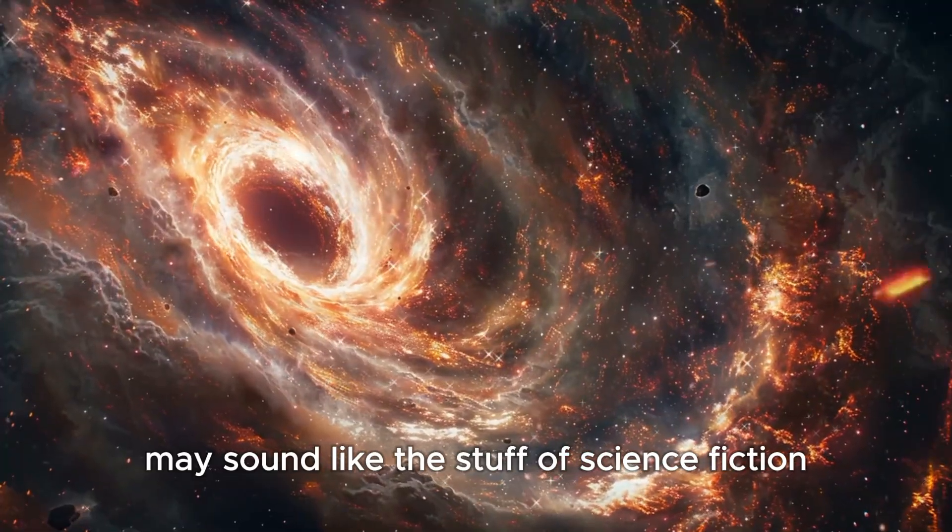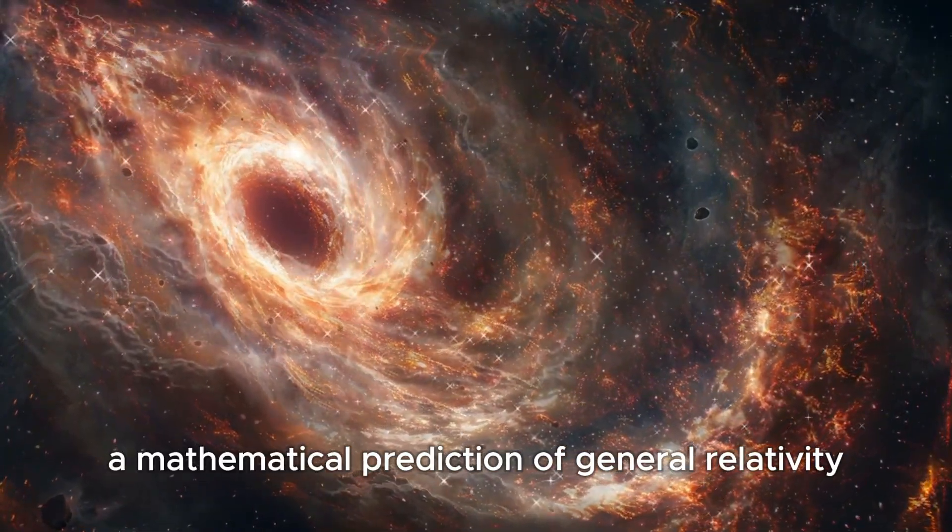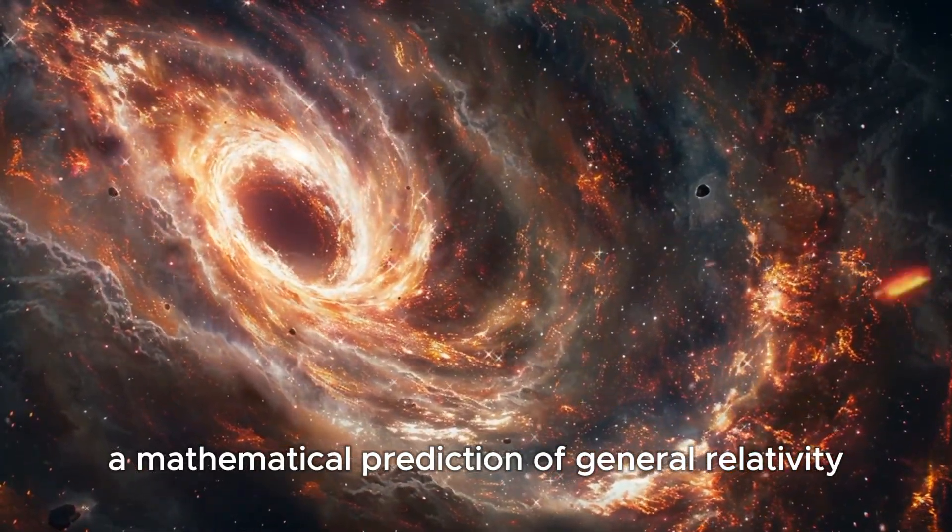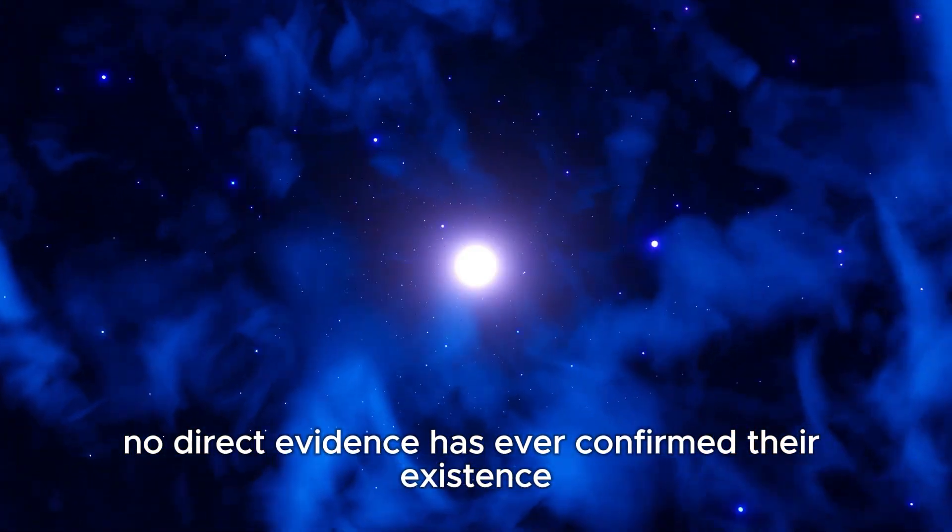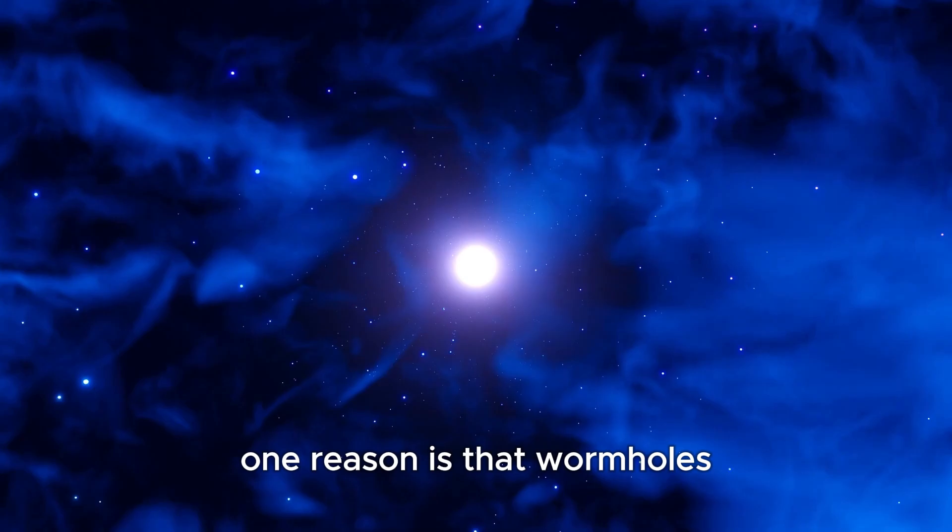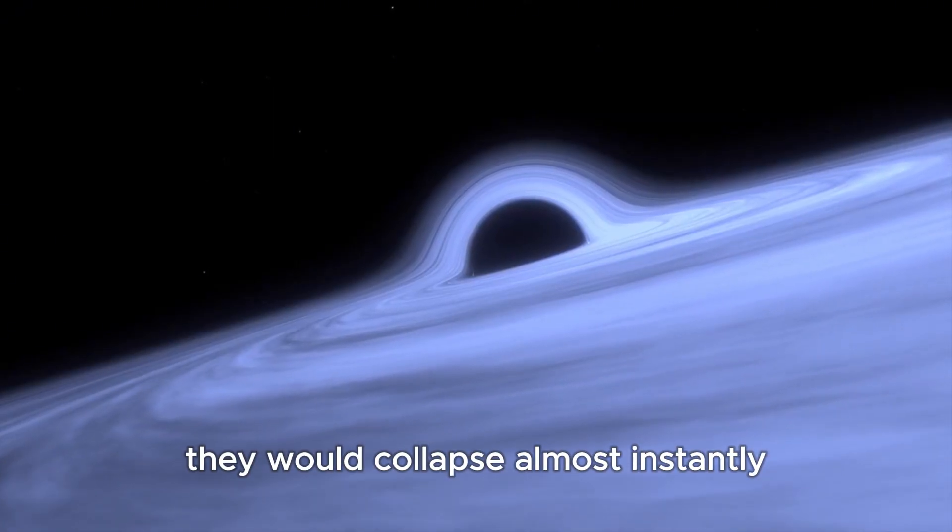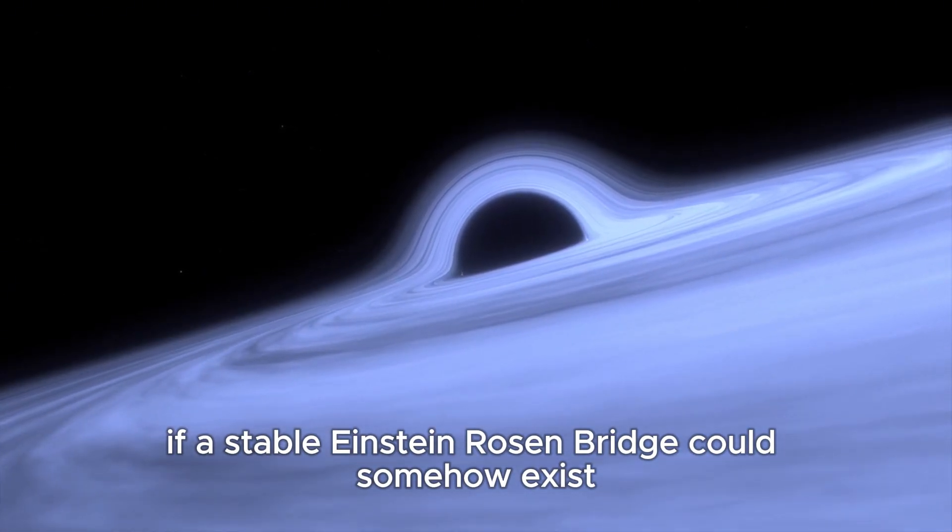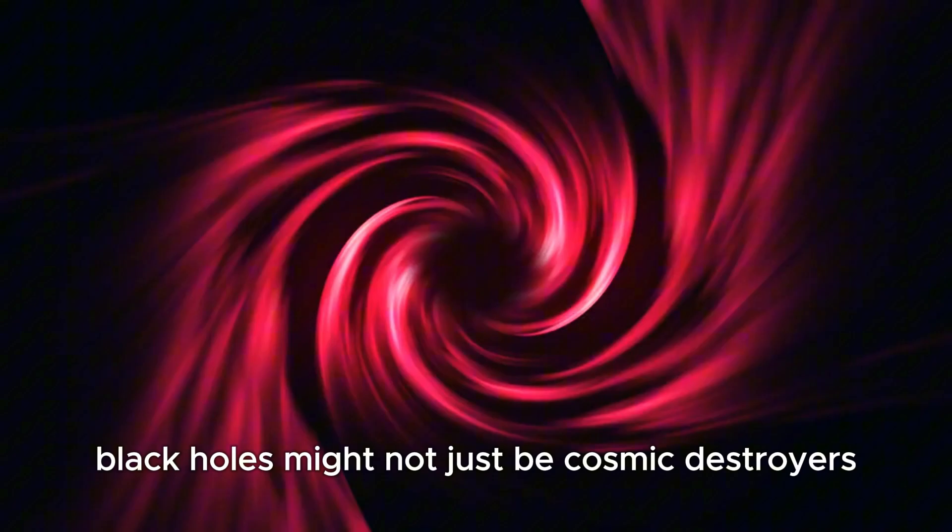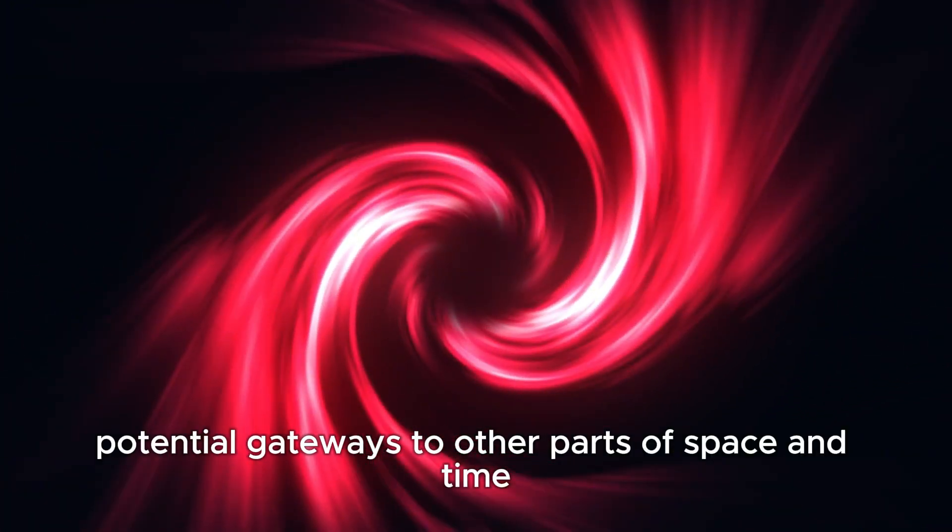While wormholes may sound like the stuff of science fiction, they are, in fact, a mathematical prediction of general relativity. However, no direct evidence has ever confirmed their existence. One reason is that wormholes are thought to be naturally unstable. They would collapse almost instantly. Yet, if a stable Einstein-Rosen Bridge could somehow exist, black holes might not just be cosmic destroyers, but also potential gateways to other parts of space and time.